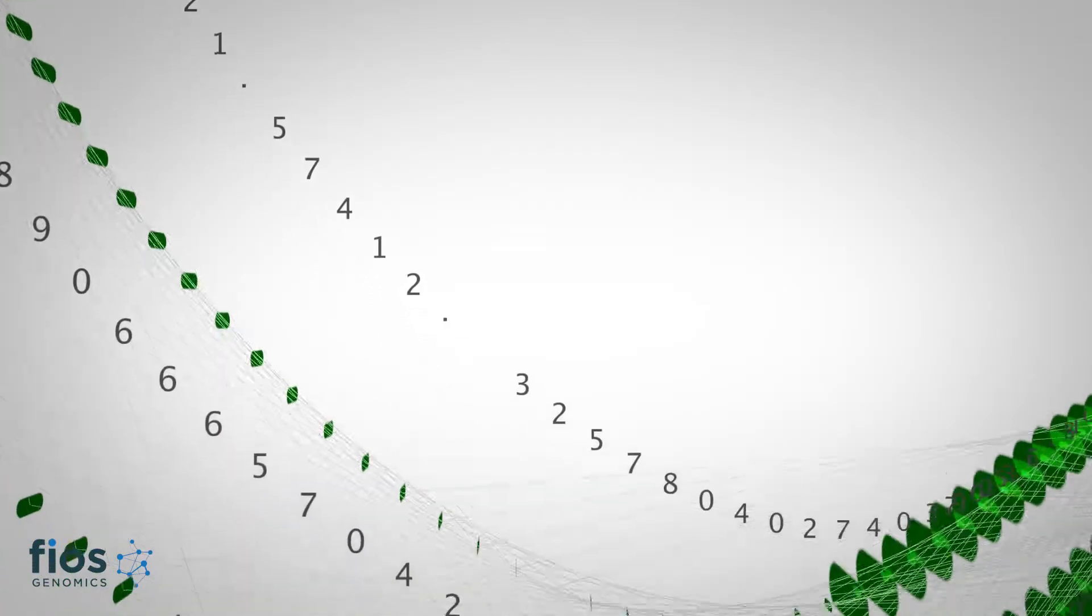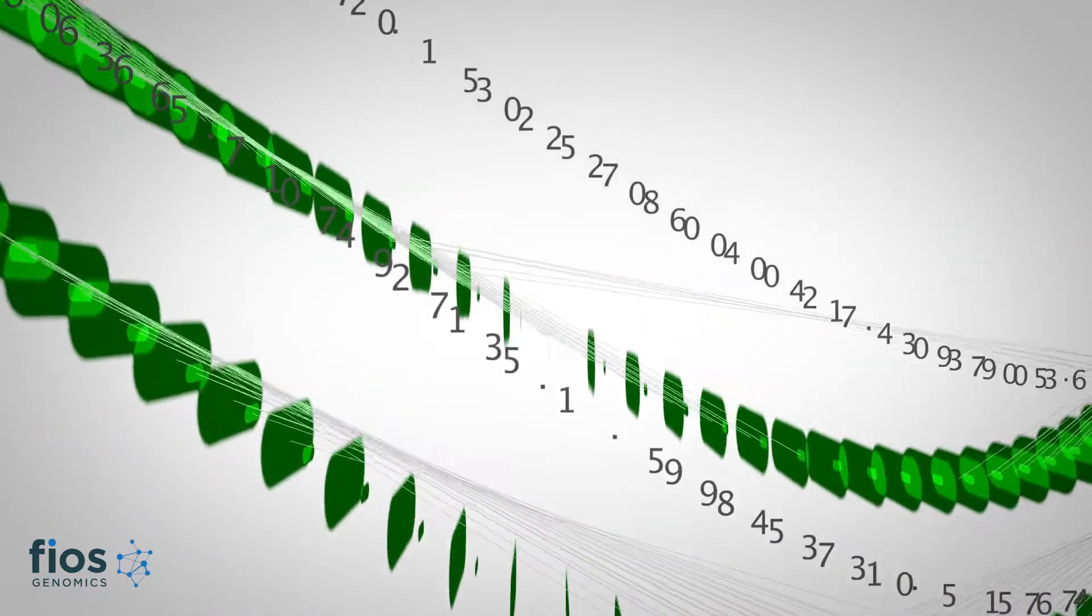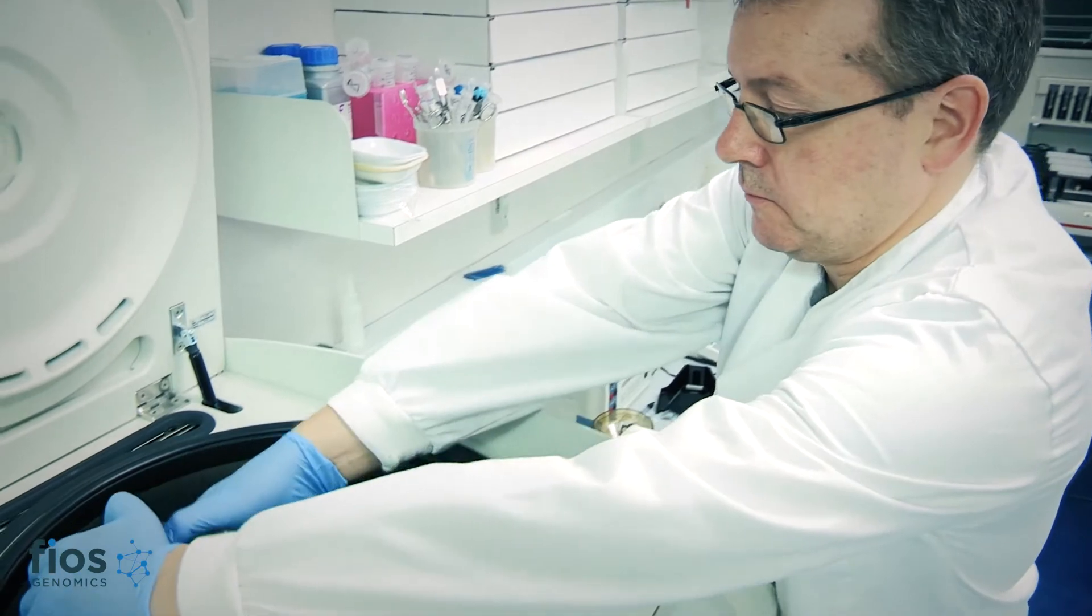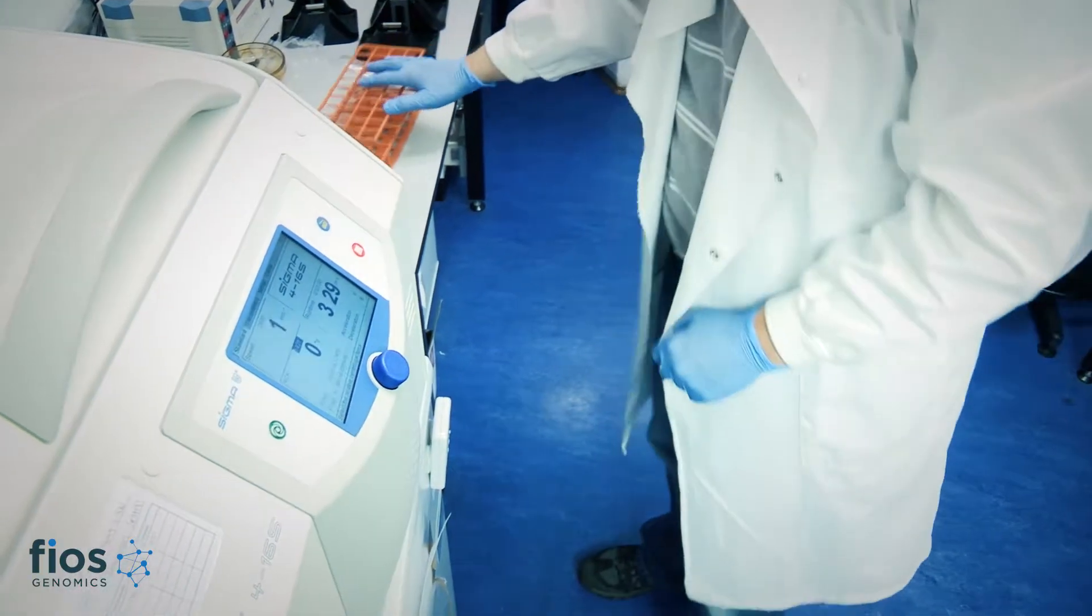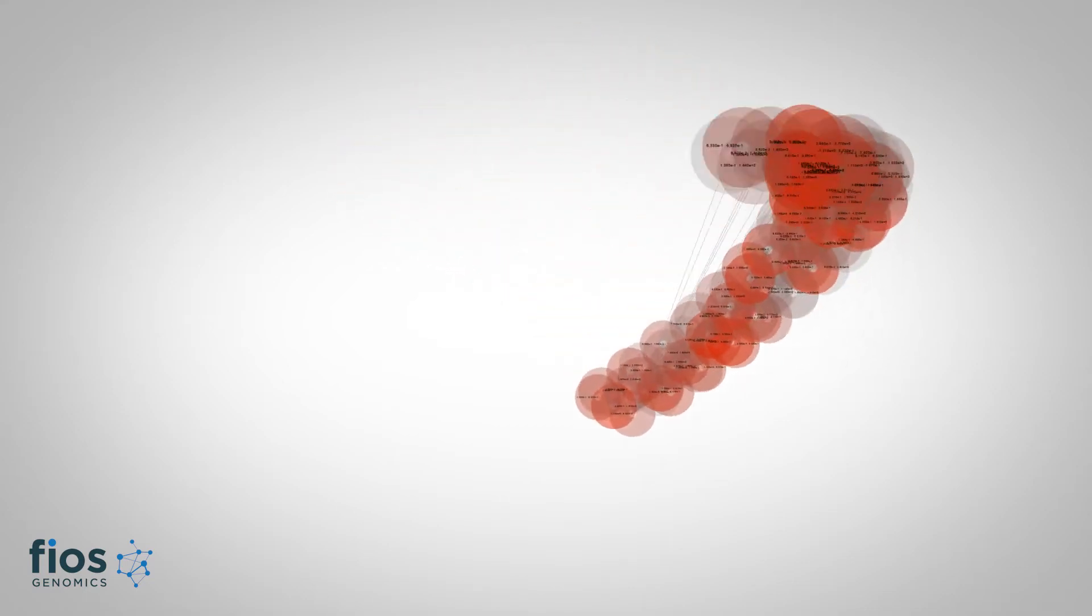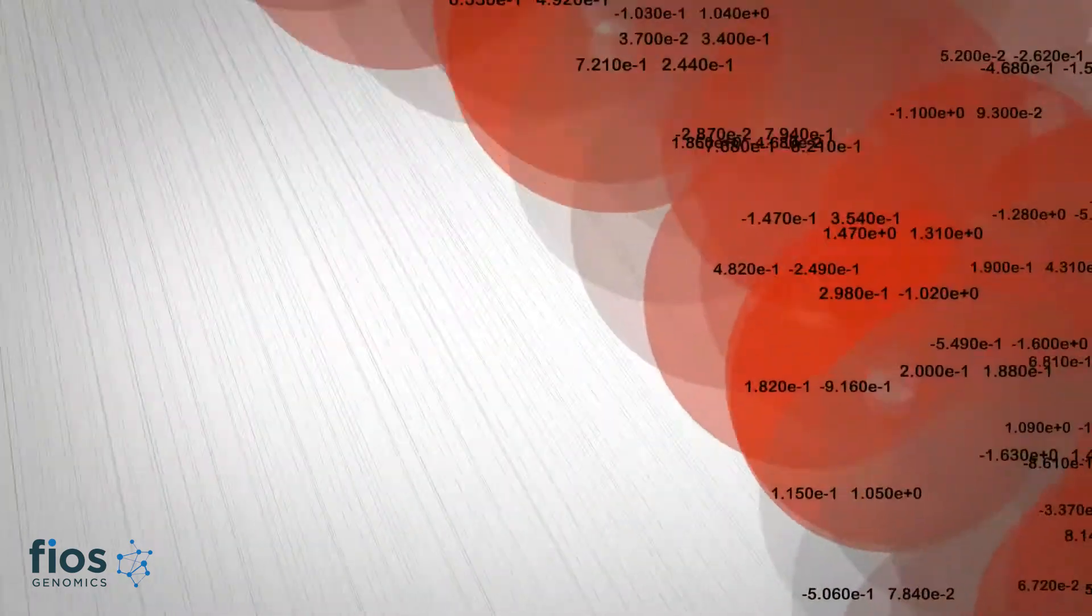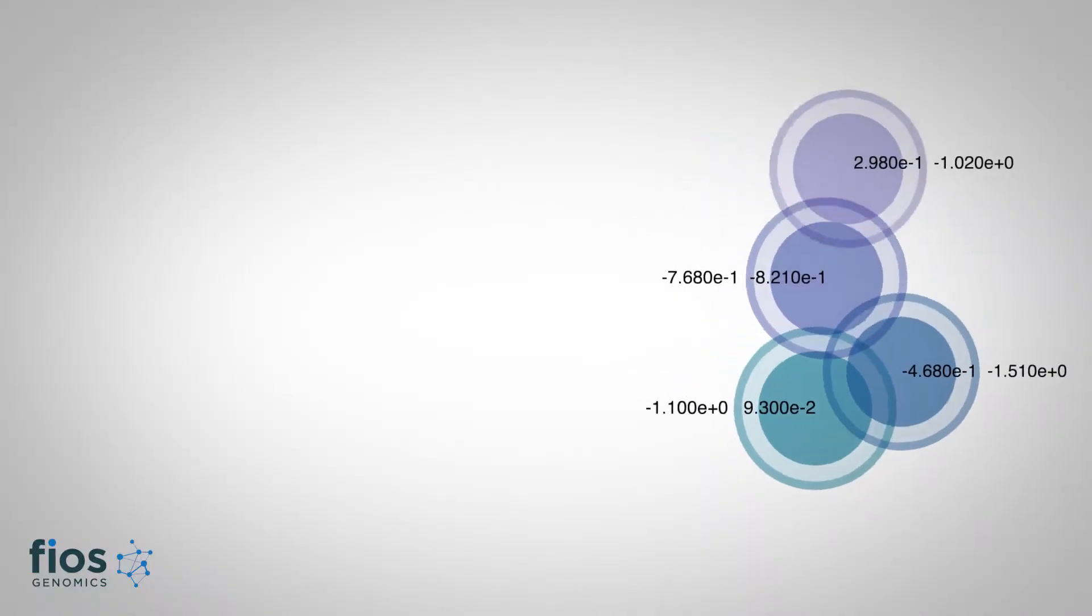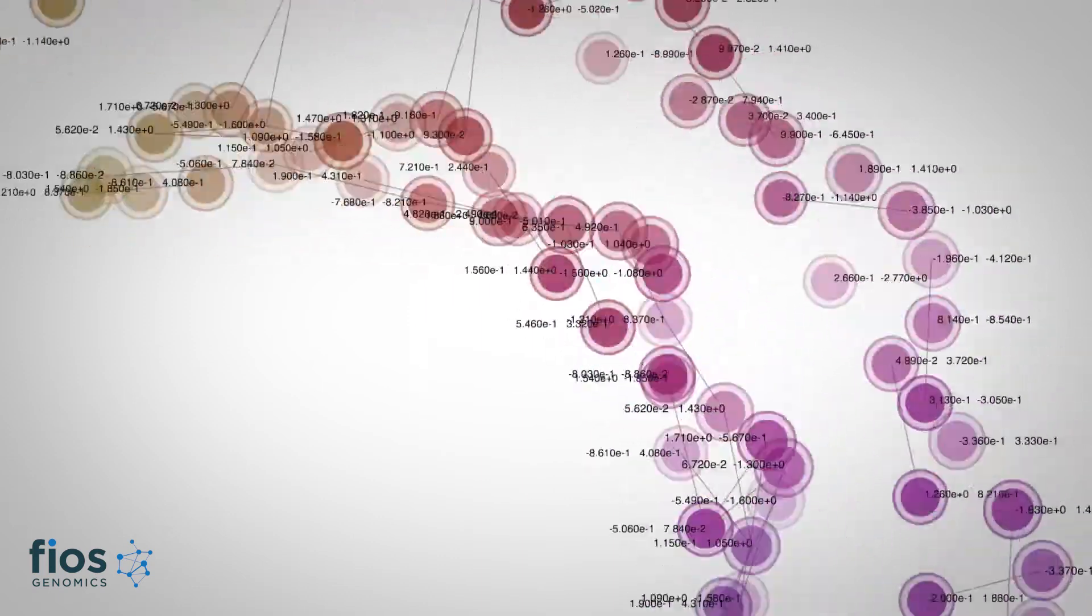These are the things you really must do when designing an experiment. Pick the right platform is the first one. Make sure that you're able to detect the things that you're looking for. Run the samples in a way to avoid any associations between technical factors and the biological groups. So for instance, randomization where you can. If you can't randomize, make sure that you have a structure in the data that enables you to separate out the technical and the biological factors. The important thing is about what do you want to know, and design the experiment to answer that specific question.